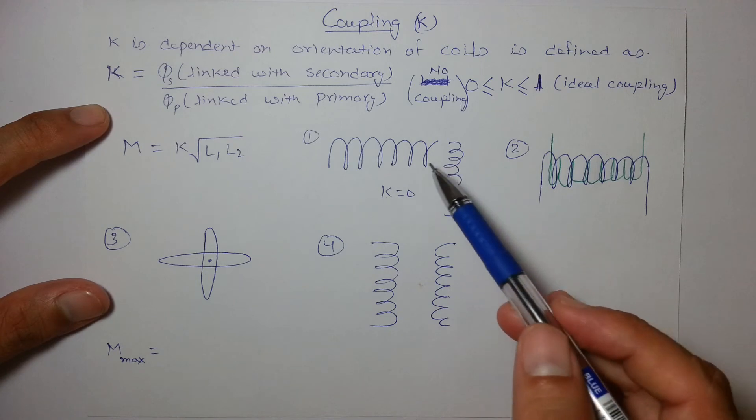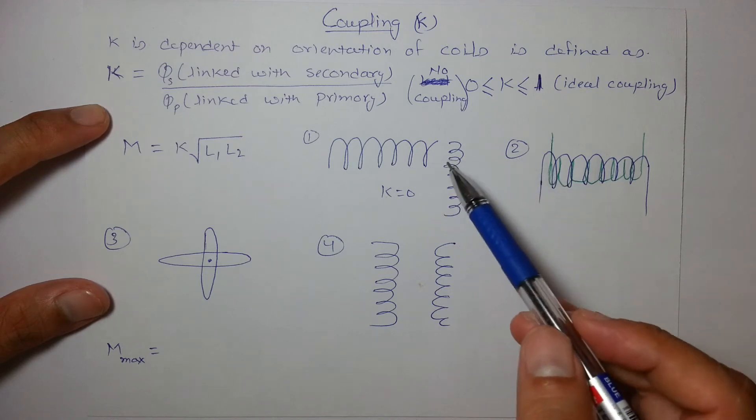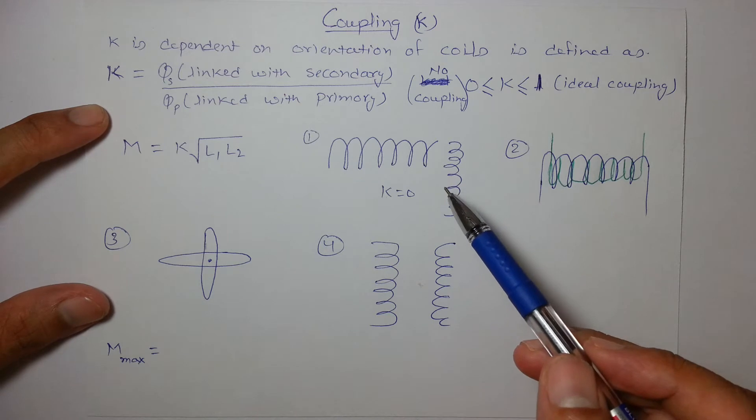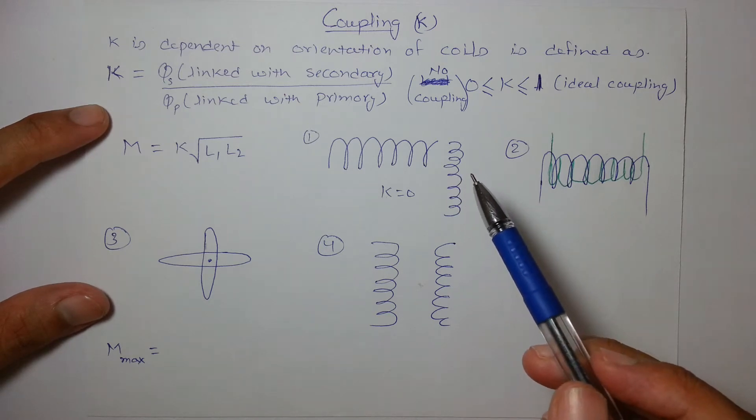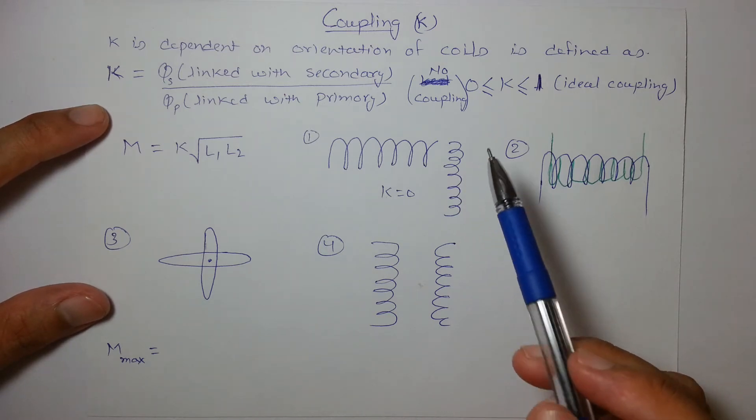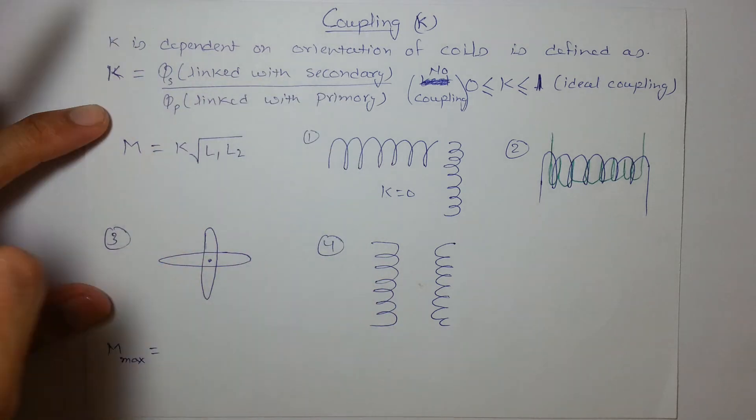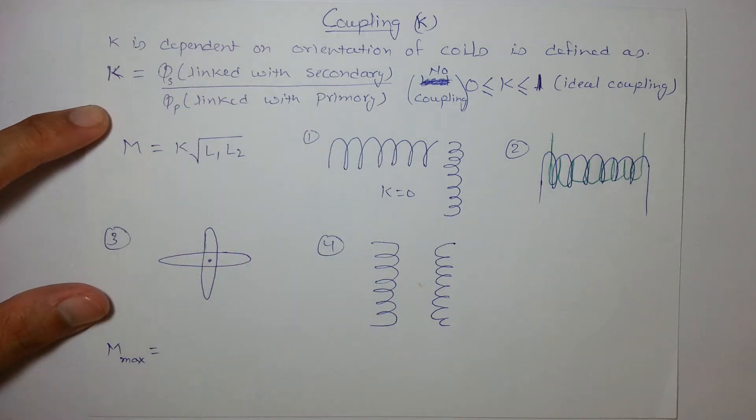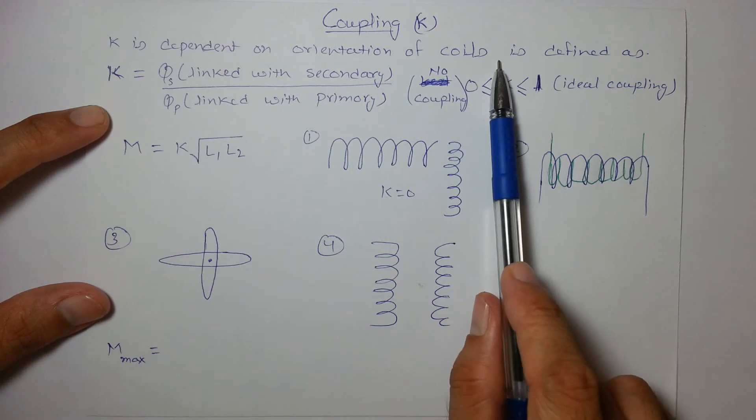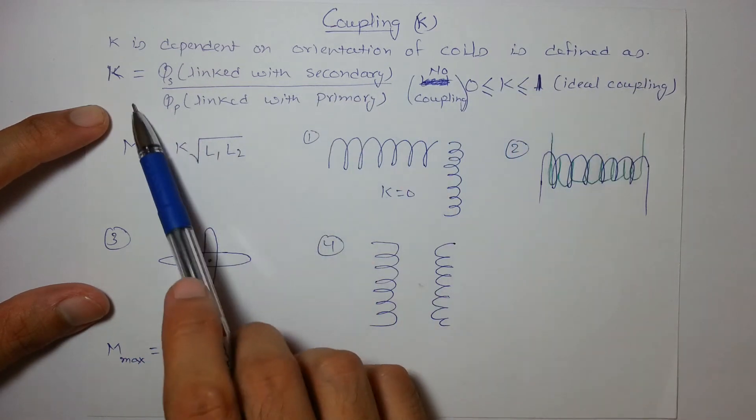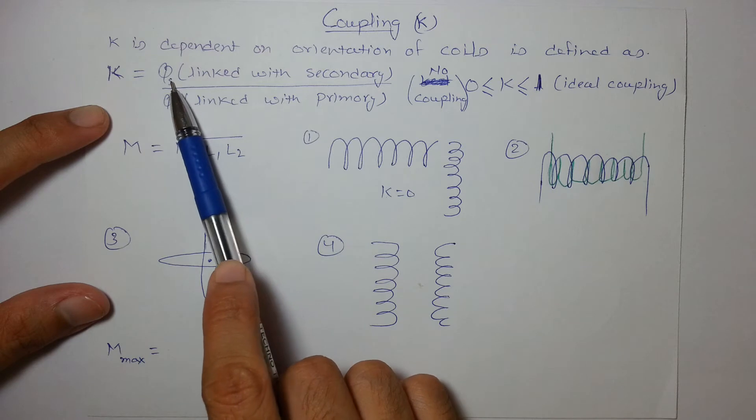That interdependence or spatial arrangement is explained by coupling. So K is the coefficient. Coupling is dependent on the orientation of coil which is defined as flux through secondary divided by flux through primary.